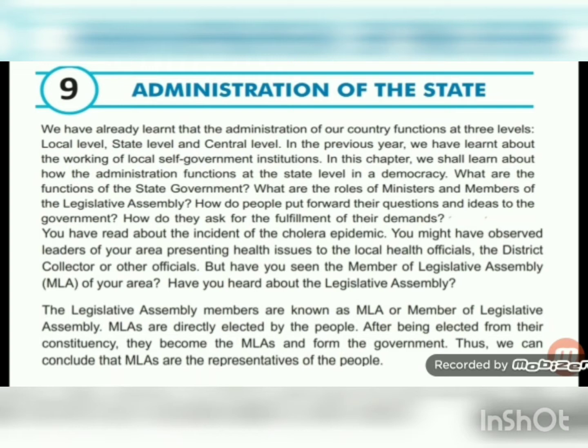Last year we learnt about local self-government, and this year we are going to learn more about the administration of the state. We know about the three function levels: local level, state level, and central level. To understand the government's fulfillment of demands, we are going to take the example of the COVID-19 pandemic.